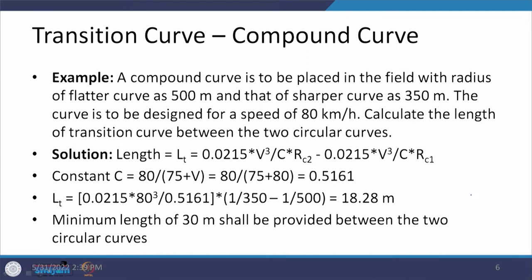Now let us look at an example. We have a compound curve with radii of 500 meters and 350 meters, designed for a speed of 80 km/h. We need to calculate the length of the transition curve between the two circular curves. The formula uses the difference between transition lengths based on the rate of change of centrifugal acceleration: 0.0215 V³ / (C × RC2) minus 0.0215 V³ / (C × RC1), where V is in km/h.